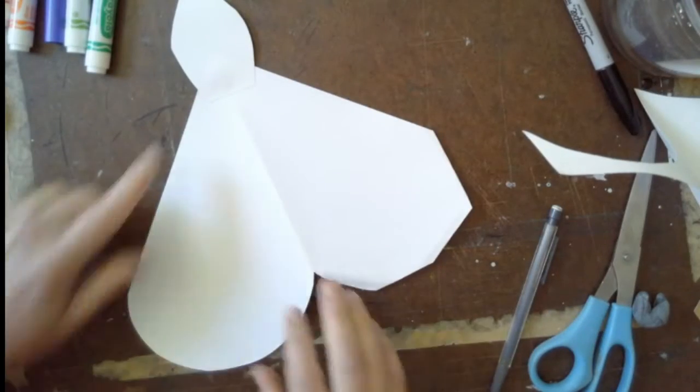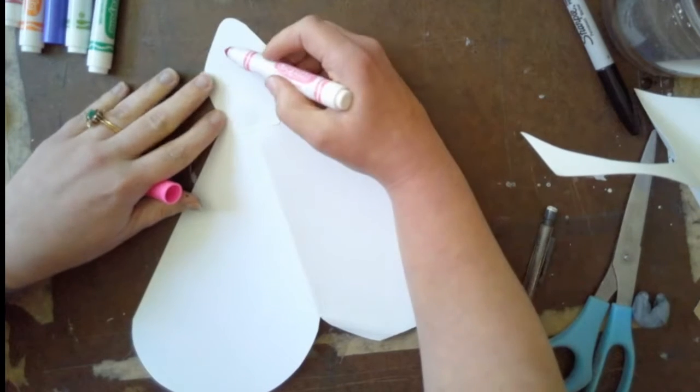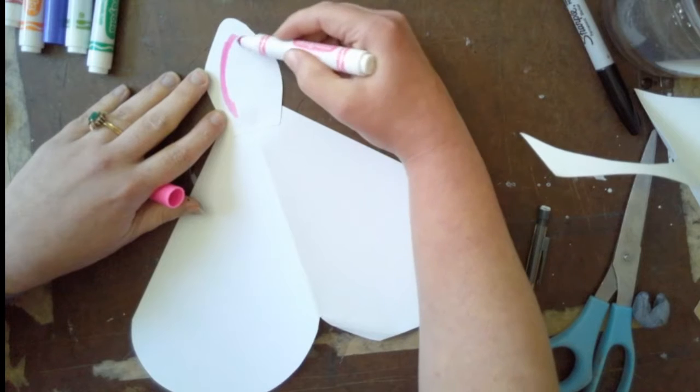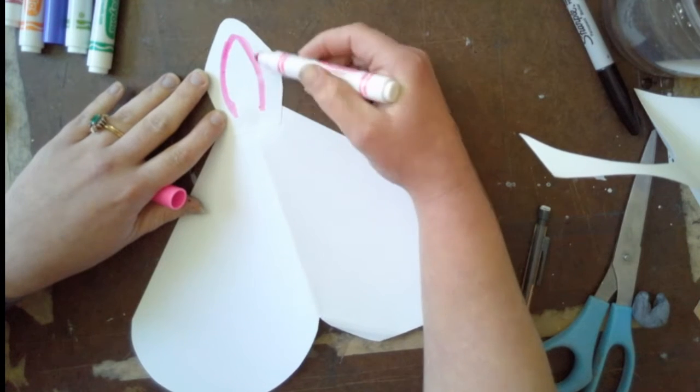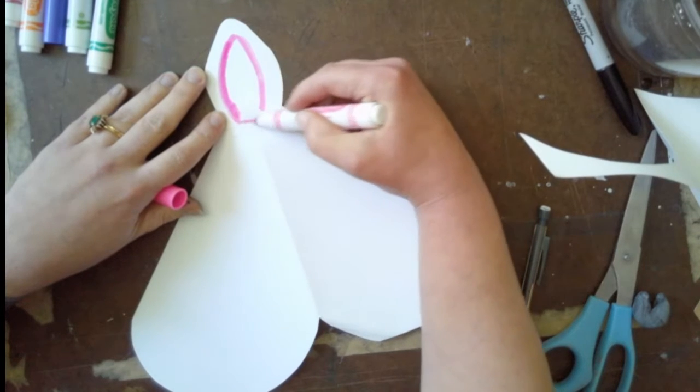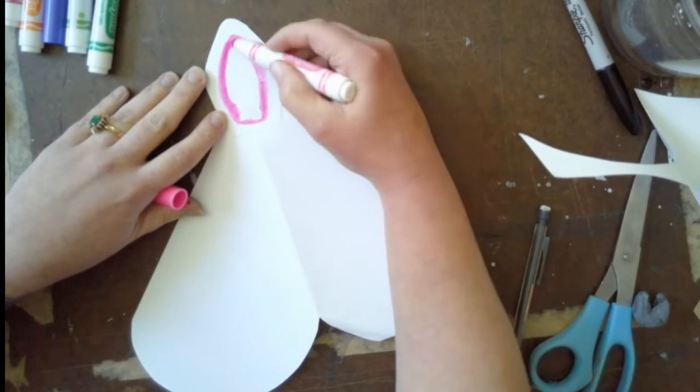For the inside of the ear, I'm just using some pink markers, and then I'm going to use the water method again to kind of turn it into more of a paint. That's up to you. Once I add the water to the inside of the ear, since I already have some pink on my brush, I also use that to kind of give my unicorn some rosy cheeks.